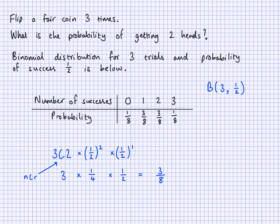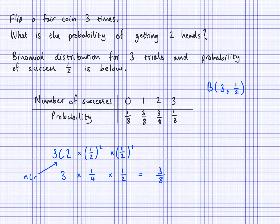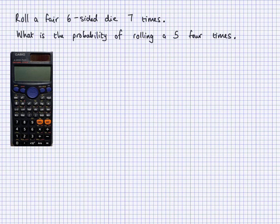For three trials maybe you can use other methods, but say we had ten trials instead. If we flip a coin ten times and want two heads, that would be 10C2 × (1/2)² × (1/2)⁸, because there would be two heads and eight tails. Also, these probabilities do not have to be fractions — they can be decimals. We could have written 0.375 because 3/8 is also 0.375. That won't make any difference.